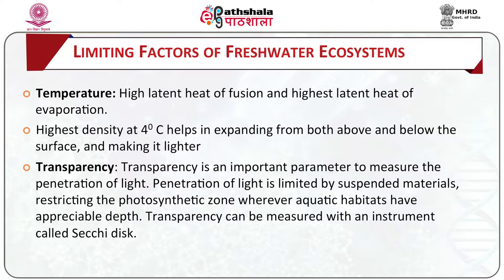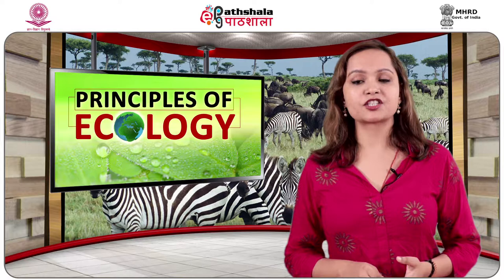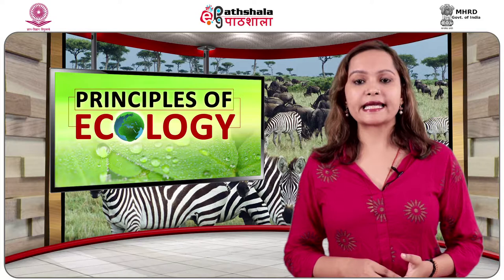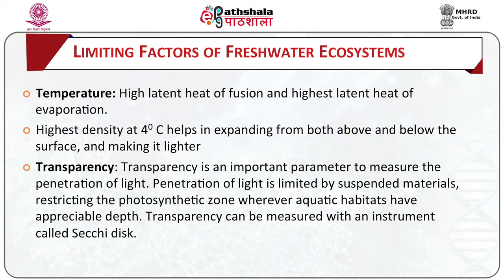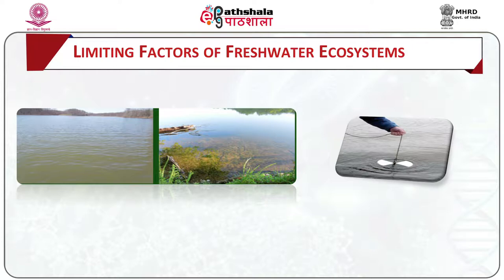Transparency is an important parameter to measure the penetration of light. Penetration of light is limited by suspended materials, restricting the photosynthetic zone where aquatic habitats have appreciable depth. Turbidity is caused either by clay and silt particles or by excretory products of living organisms. Turbidity caused by suspended clay and silt particles is considered an important limiting factor, while turbidity caused by living organisms is a measurement of the productivity of the water body. Transparency can be measured with an instrument called the Secchi disc — a wide disc about 20 cm in diameter that is lowered from the surface until it just disappears from view. Secchi disc transparency of an unproductive clear lake is about 40 meters, whereas in a heavily turbid water body it is as low as a few centimeters.